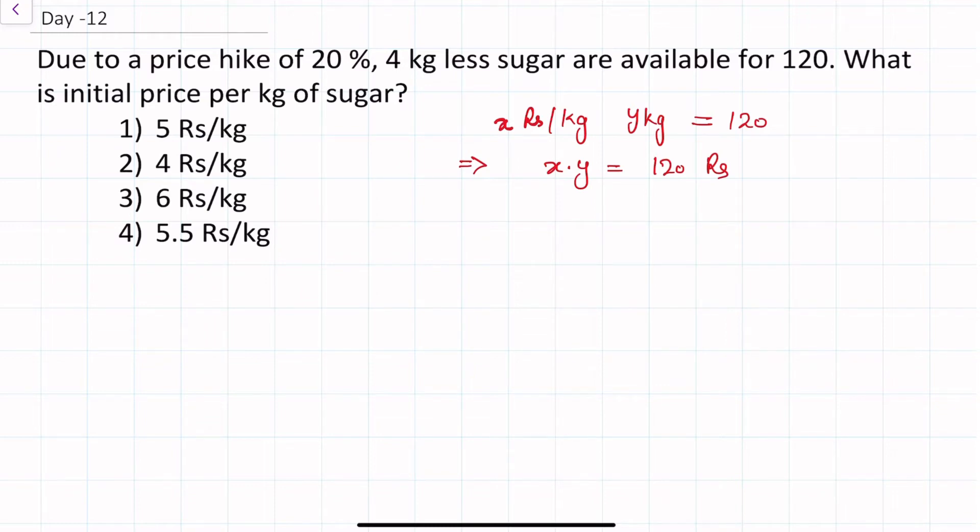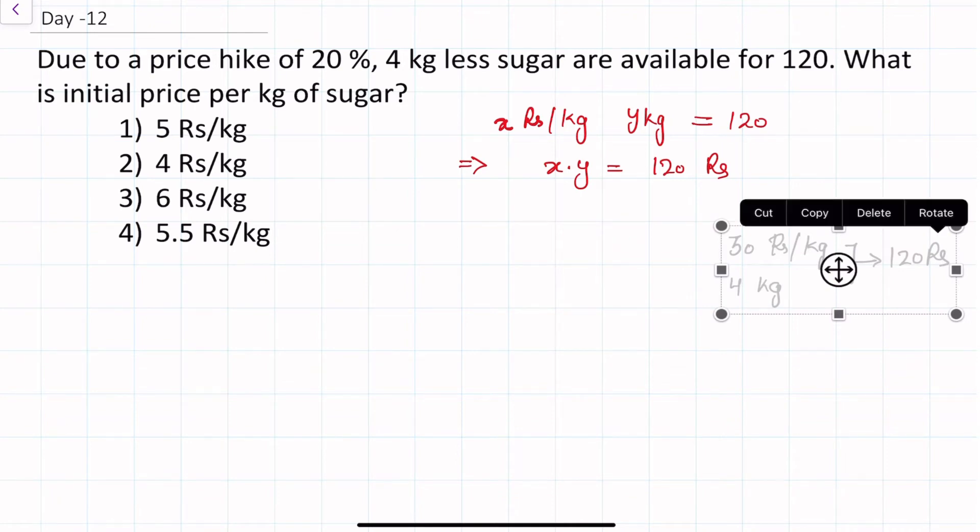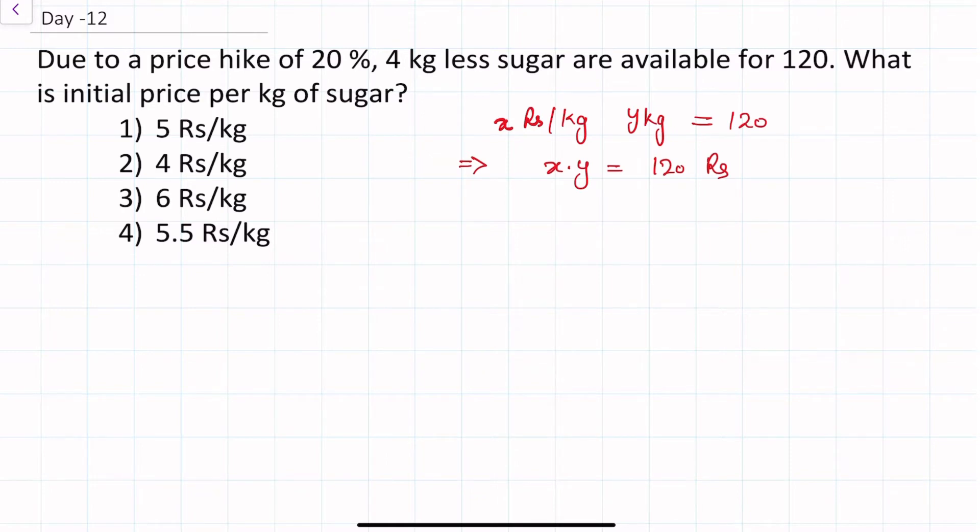For example, if any item is 30 rupees per kg, then 4 kilo will be 120 rupees. So in this way, x into y which is equals to 120 rupees. We consider this as equation number one.